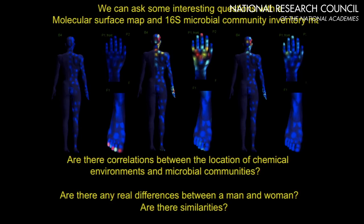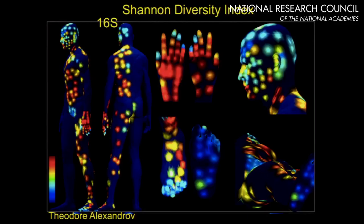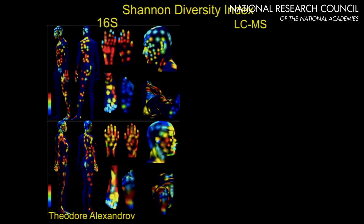When you have spatial information, even if you don't know what the molecule is or don't have an identification, you can begin to start asking questions. One question we wanted to answer is: is the majority of the chemistry we see on the skin driven by the microbes that are present? One way to answer this is to calculate the diversity of microbes in relationship to the diversity of molecules.